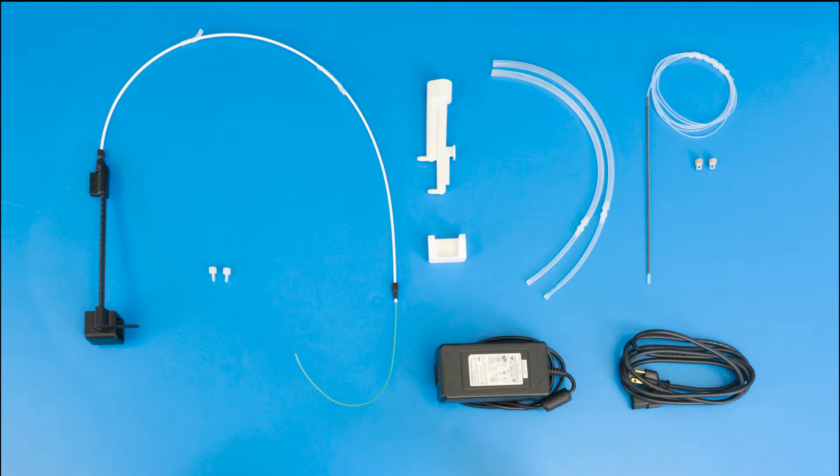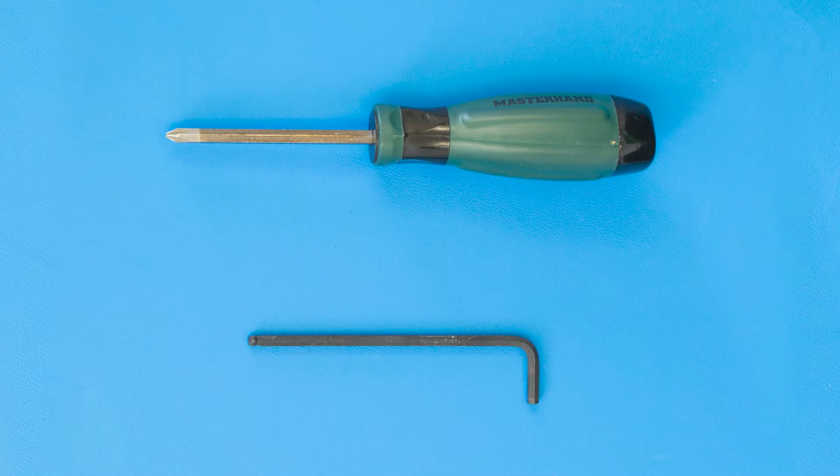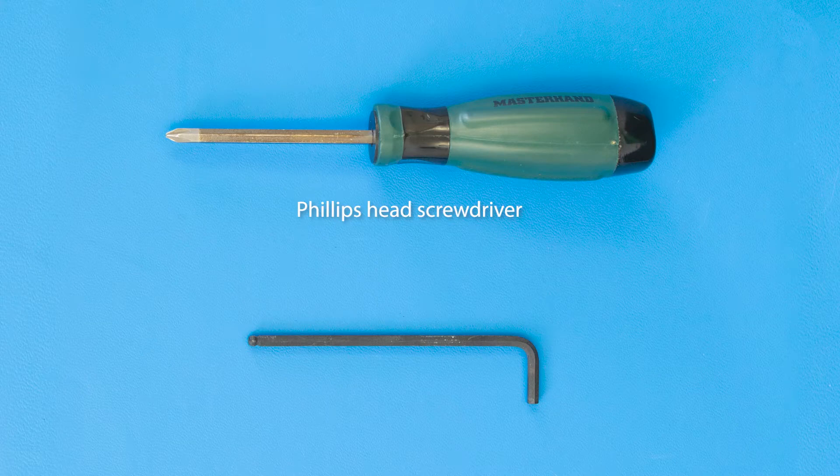You will be installing the Z-Drive assembly and thumb screws, the rinse station, the rinse tubing block, rinse and waste tubing, the sample probe and clamps, and the power supply with power cord. You will need a Phillips head screwdriver and a 5/32 inch hex key or hex screwdriver.